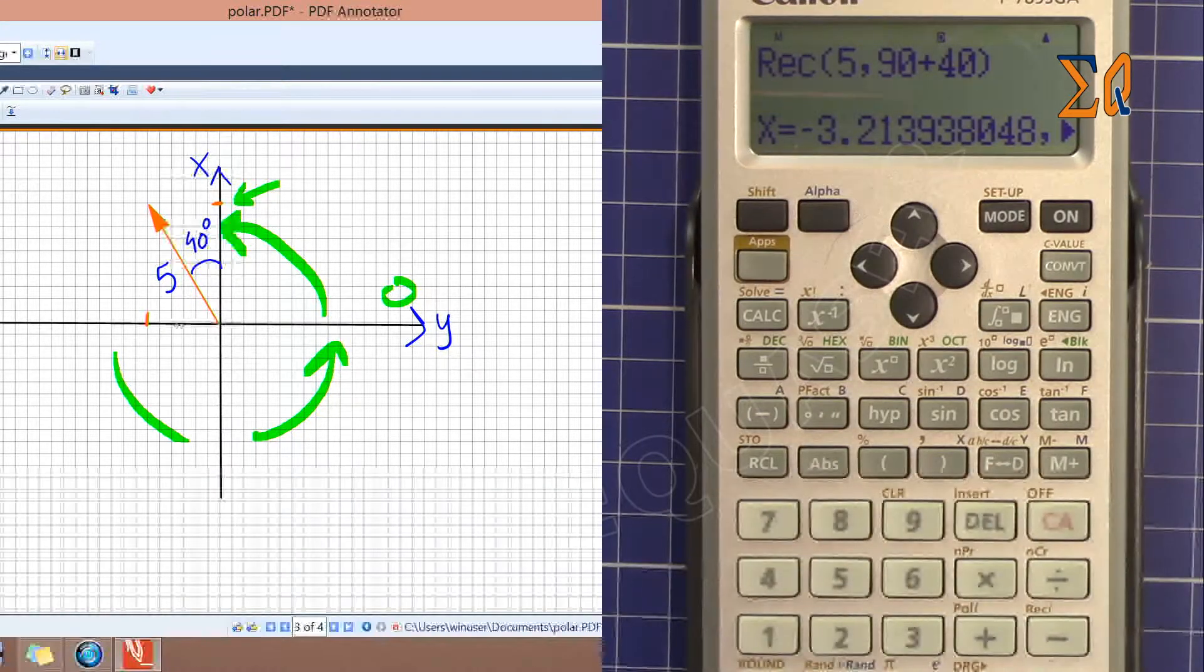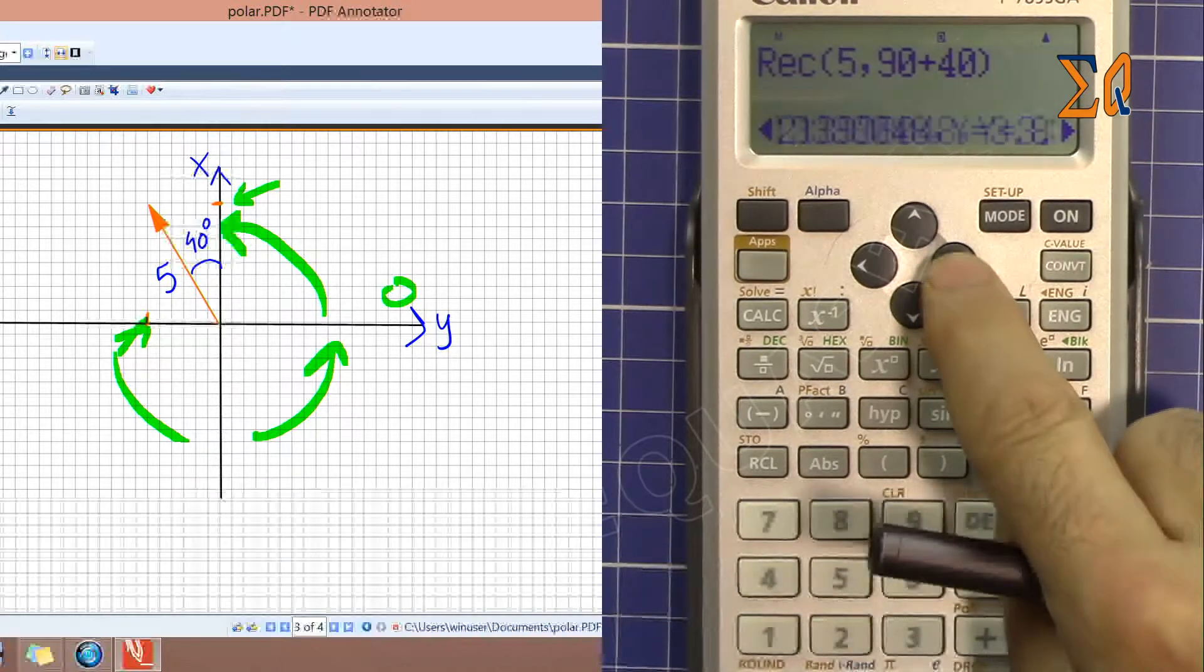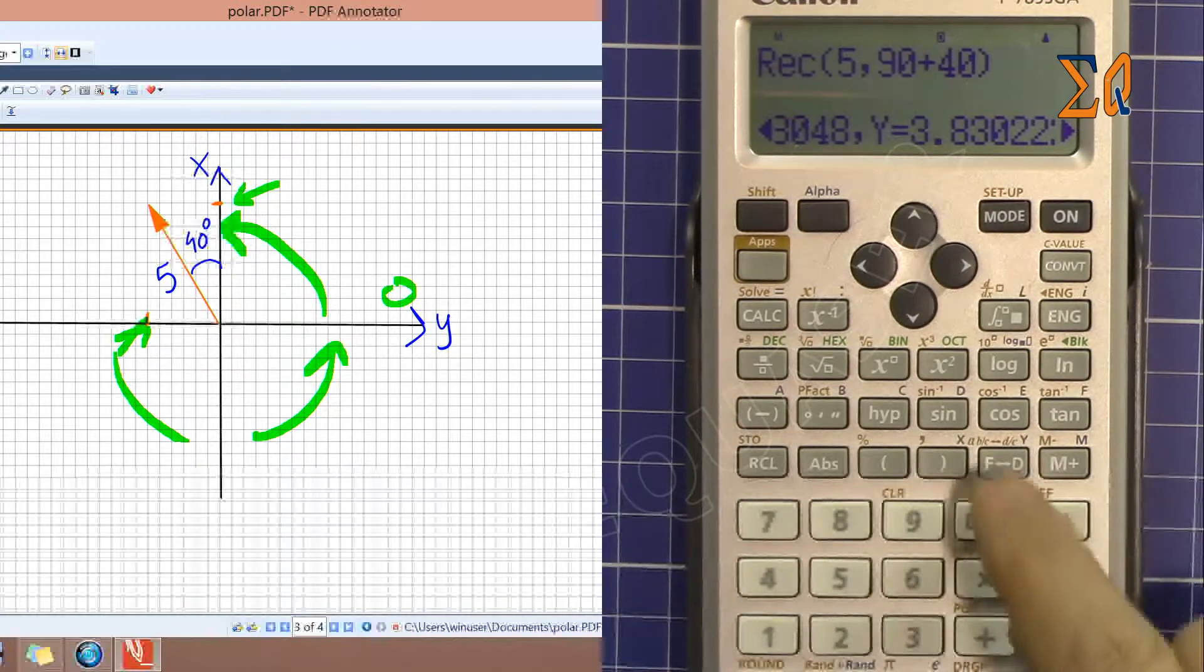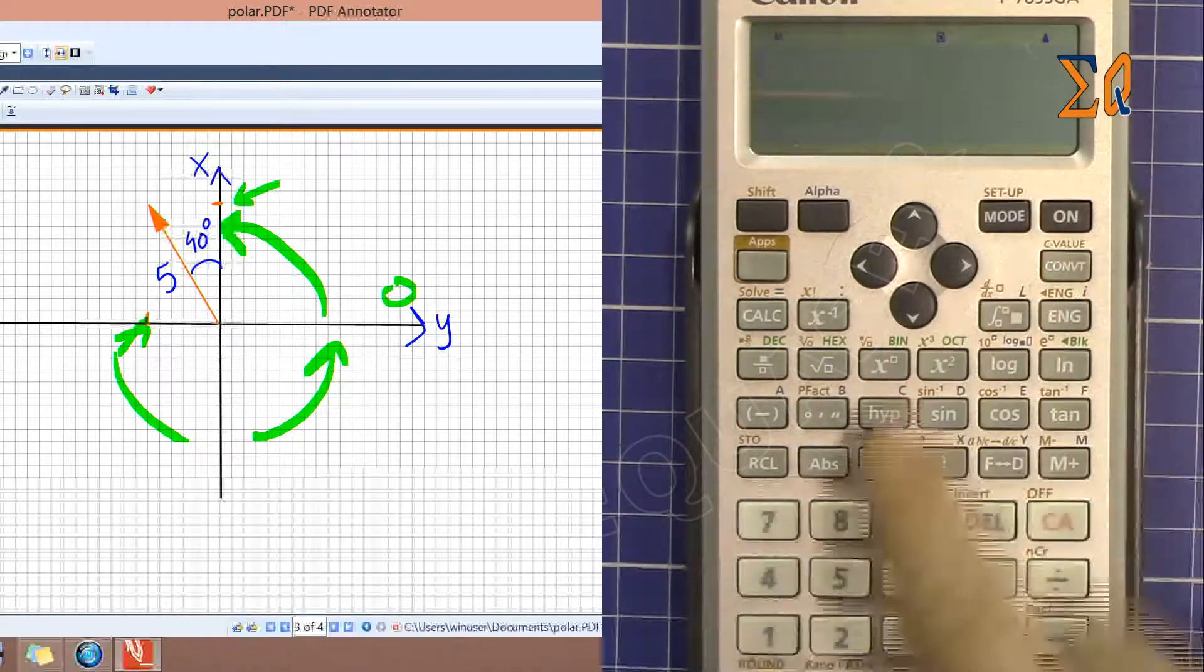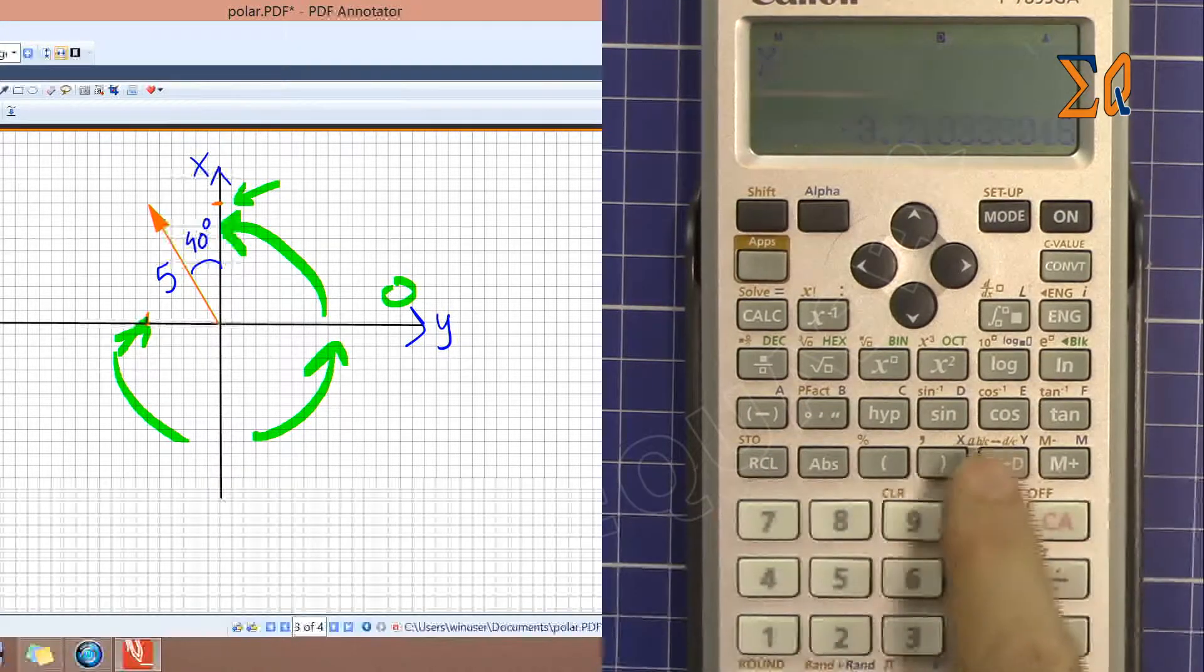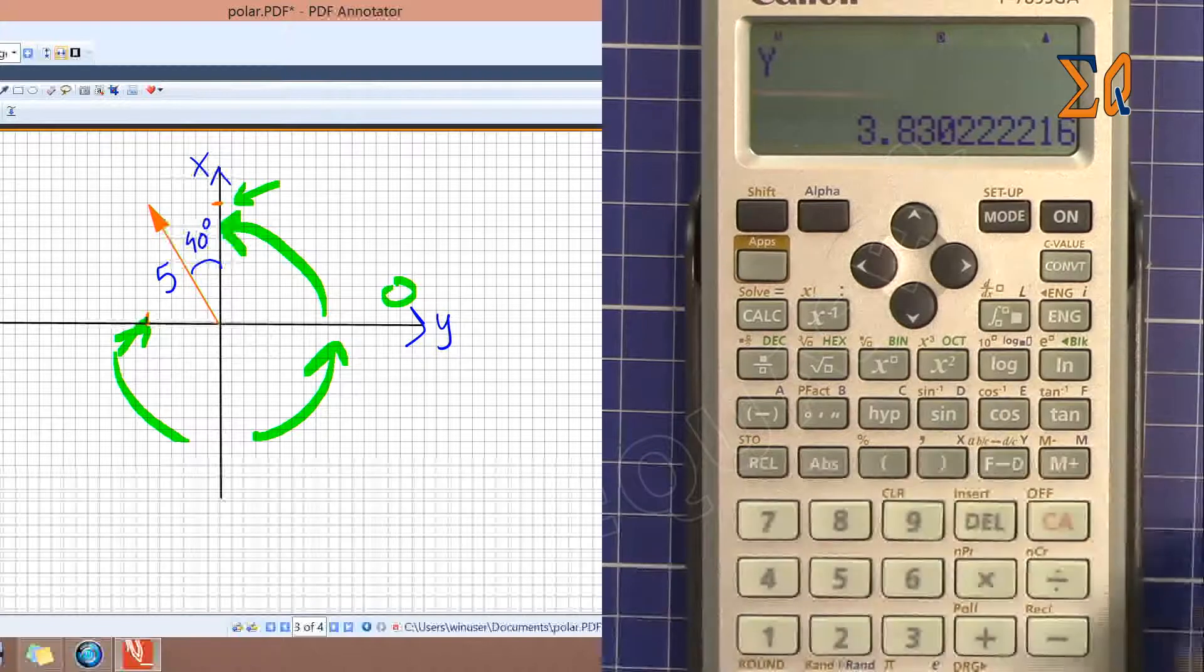And then y is 3.8 which is also correct. To get x and y, recall x, you will see it this way, and recall y, you will get that x and y value.